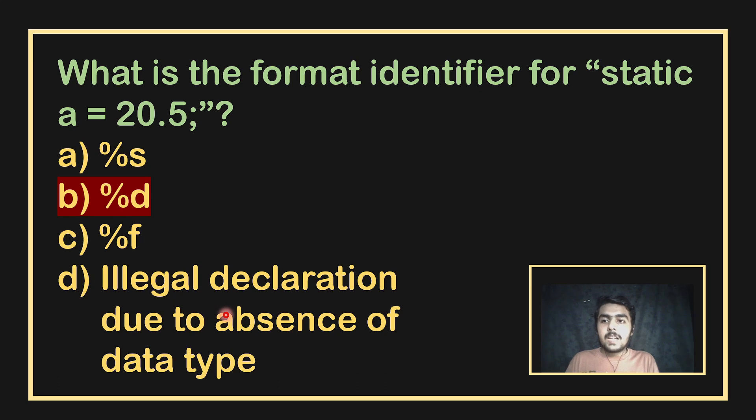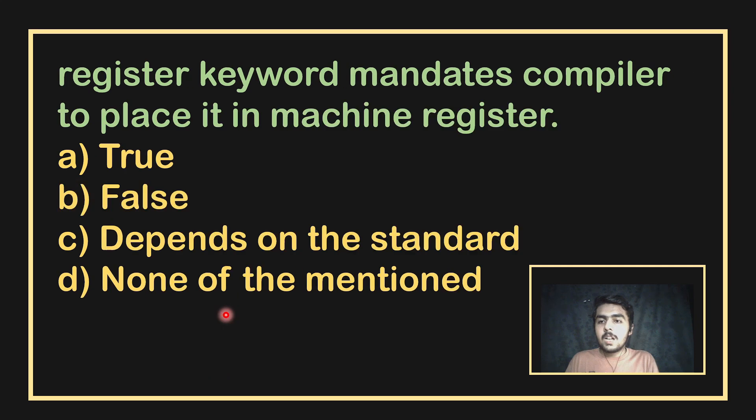What is the format specifier for static A equals 20.5? Since static A is declared without a type, by default the data type is integer. So the format specifier to use is %d.